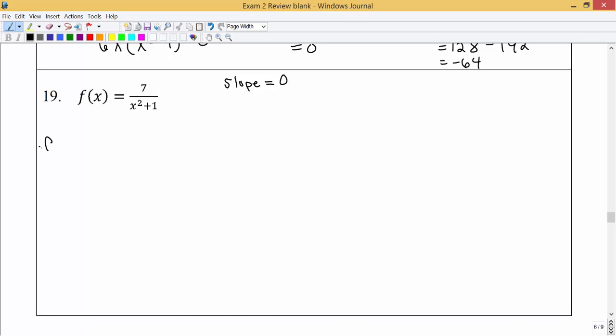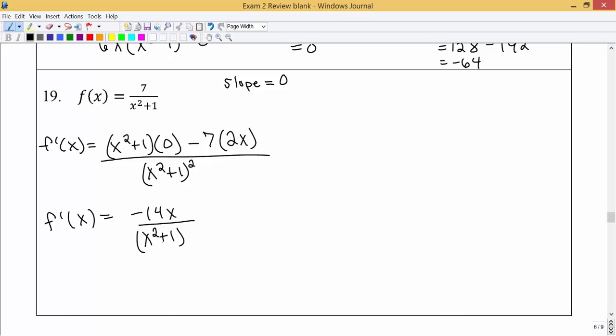So we're going to find the derivative using the quotient rule. That would be the denominator times the derivative of the numerator, which is just a constant, so that's times 0, minus the numerator times the derivative of the denominator all over the denominator squared. And we're definitely going to simplify this. Anything times 0 is just 0, so we end up with minus 14x all over the denominator squared.